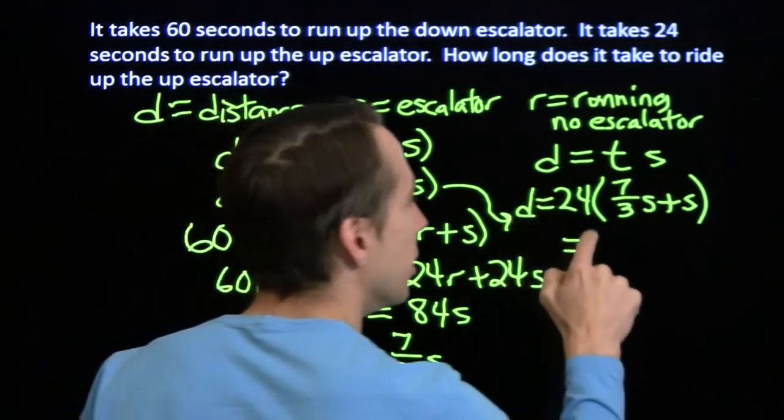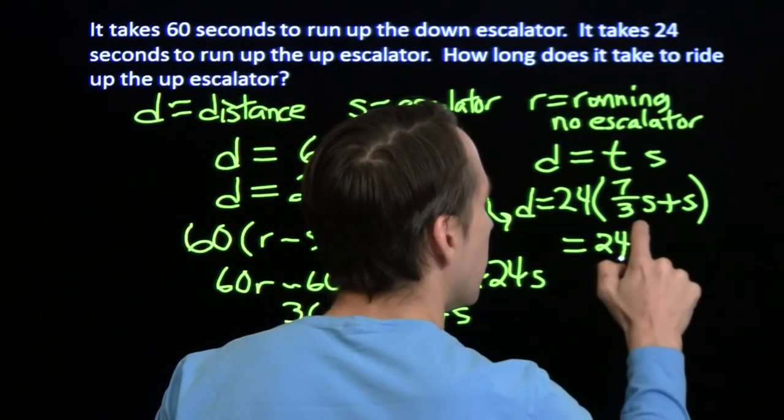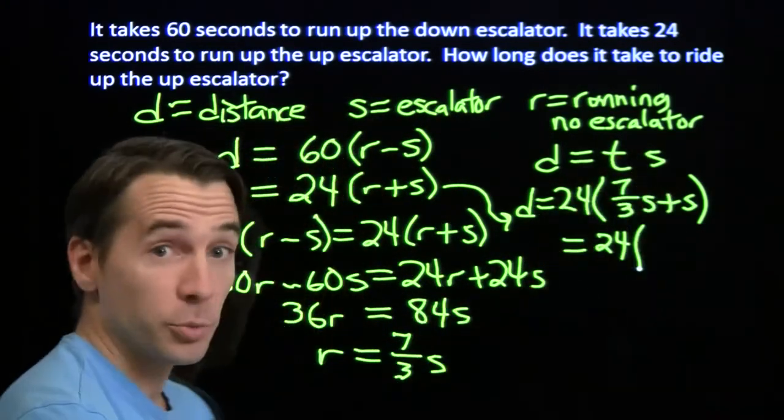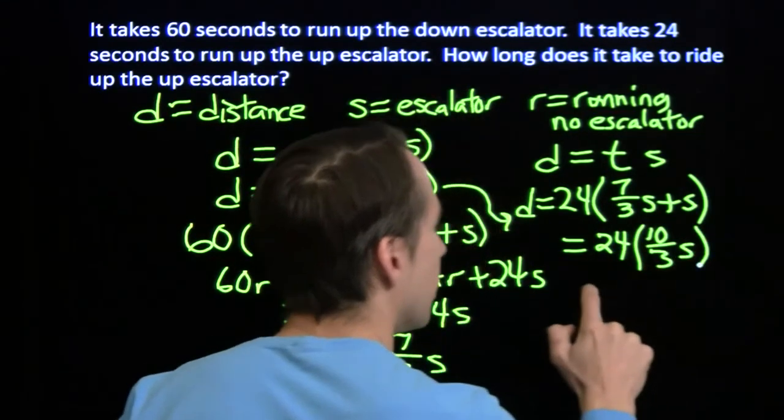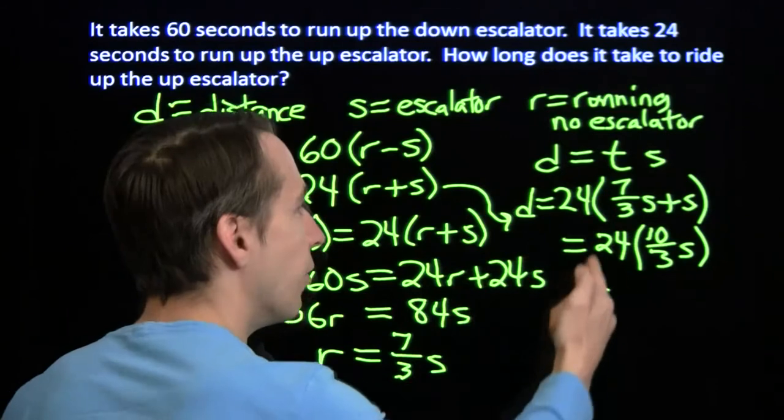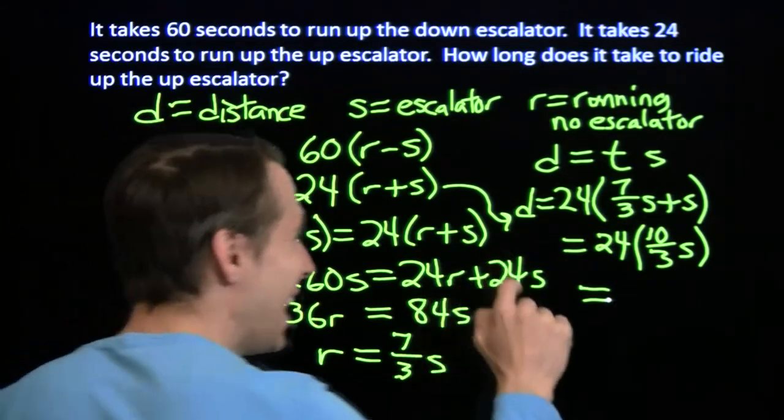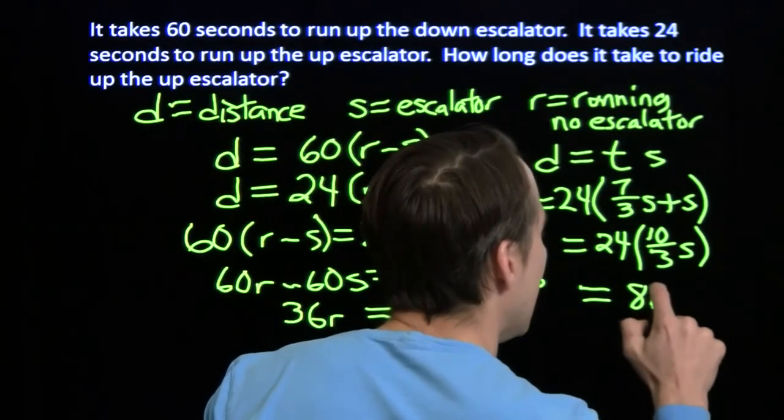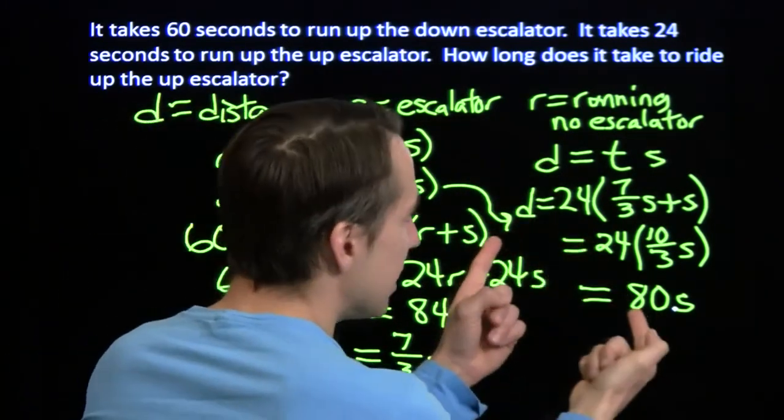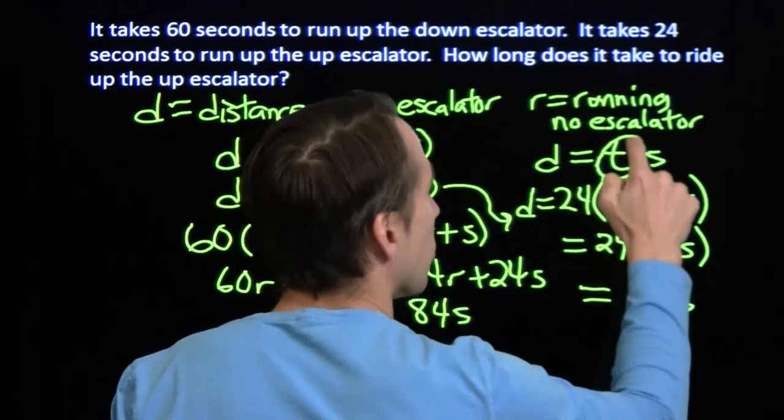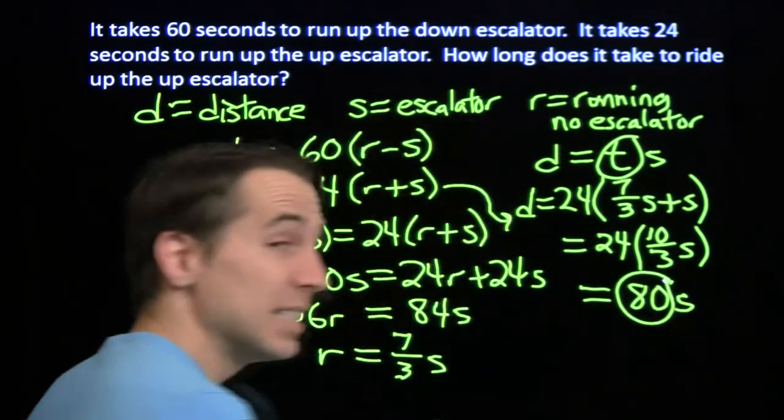So d is 24, 7 thirds s plus 3 thirds s is 10 thirds s. So we have 24 times 10 thirds. 24 divided by 3 is 8. 8 times 10 is 80s. So we see that d, d is 80 times s. So our time is 80 seconds.